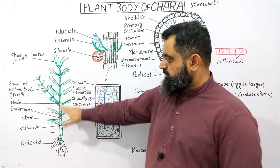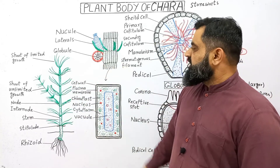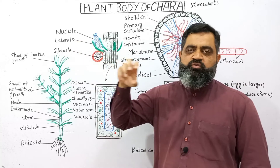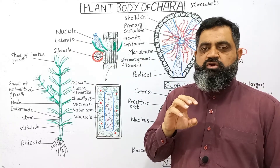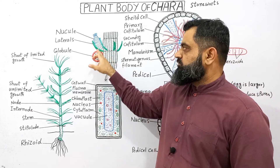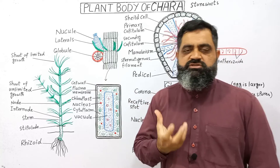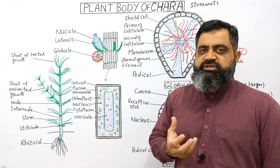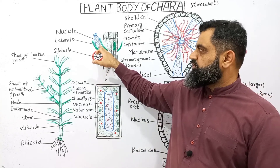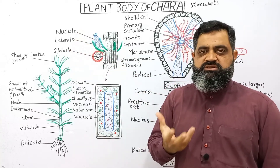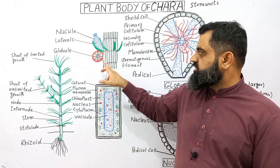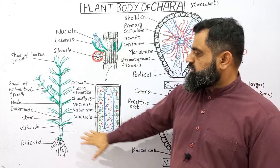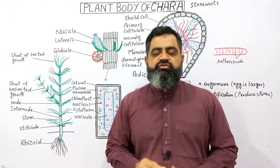When these cells combine they form the main branch of the plant, known as the stem. At the nodes, the stem contains leaf-like structures known as laterals. Between these laterals, fructifications grow — female fructifications and male fructifications. These structures produce spores. The blue-colored fructification is the female one, known as the nucule, and the male fructification is known as the globule.